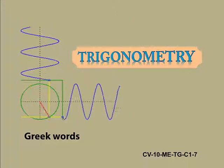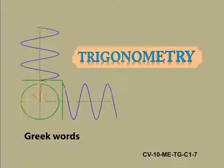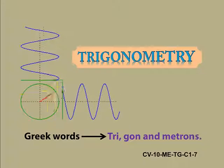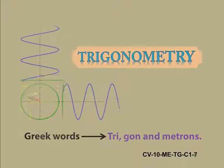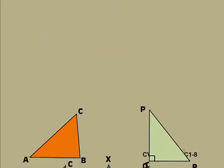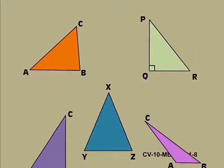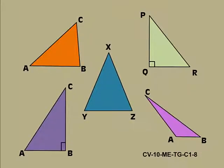The word Trigonometry is derived from the Greek words Tri, Gon and Metron. That is, Trigonometry is a study of relationship between the sides and angles of a triangle. So, Trigonometry is all about triangles.